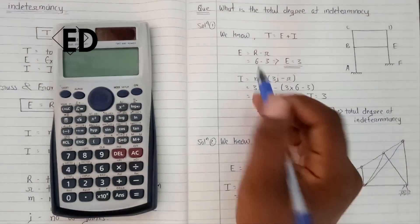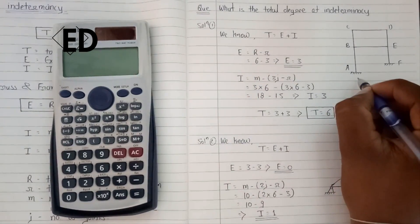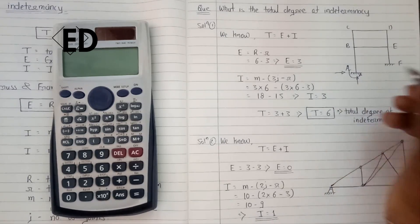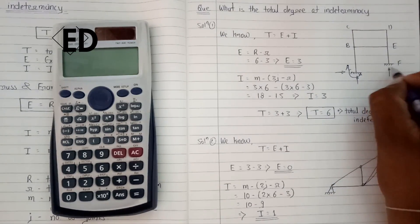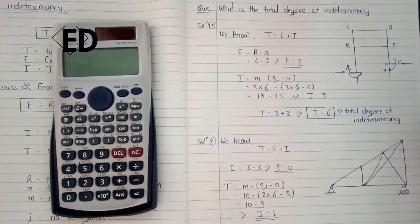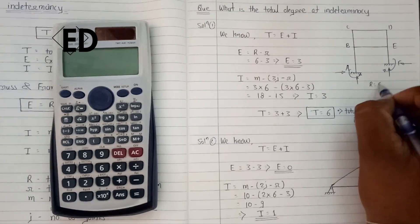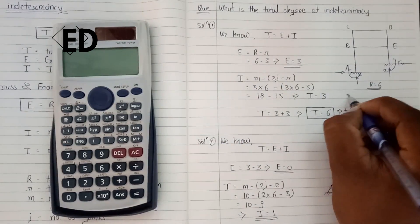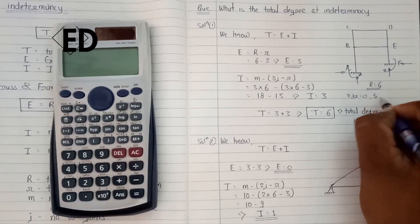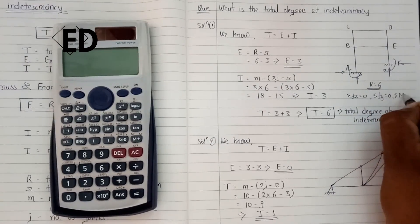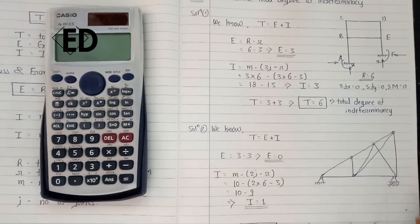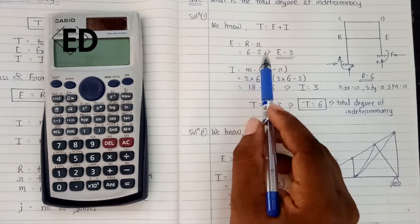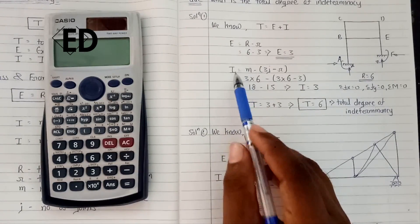Here R is the number of unknown reactions. The first support is fixed, giving a vertical reaction, a horizontal reaction, and one moment — that is three unknowns. The second support also gives a vertical, a horizontal reaction, and one moment — three more unknowns. So total R equals six. And r is the equilibrium equations: summation of horizontal forces equals zero, summation of vertical forces equals zero, and summation of moments equals zero — three equations. So E equals six minus three equals three.